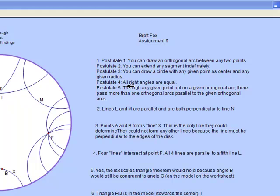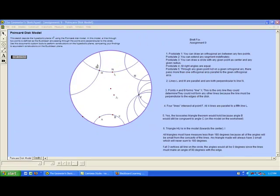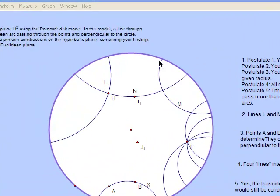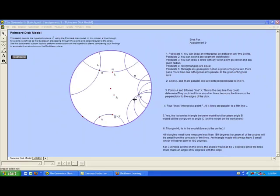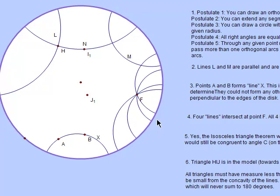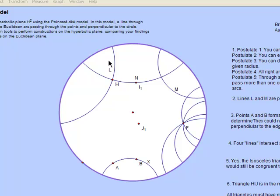So in elliptical geometry we had no parallel arcs, but now in hyperbolic geometry we can have more than one. As you can see in this model, line L and line M — which are arcs — are both perpendicular to line N, and they are parallel because they never cross. You can also see that through point F, there are four lines all parallel to line N or line X over here.